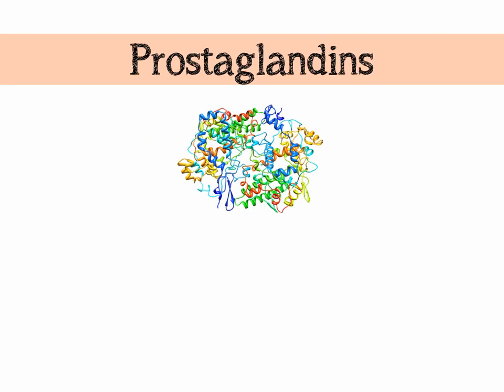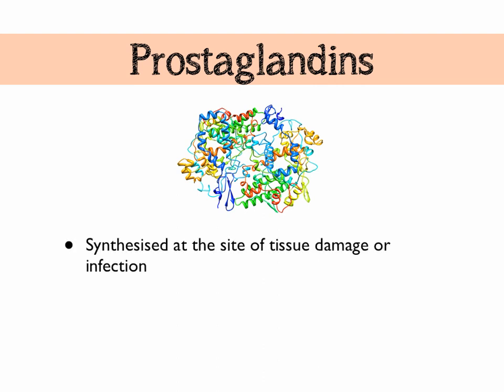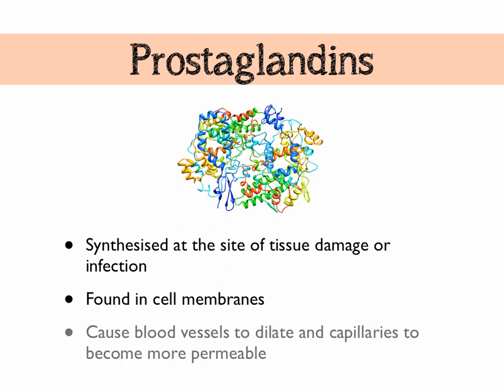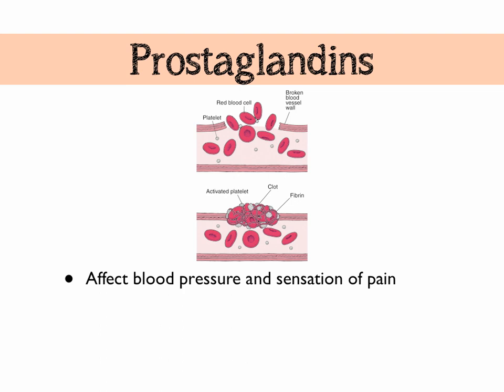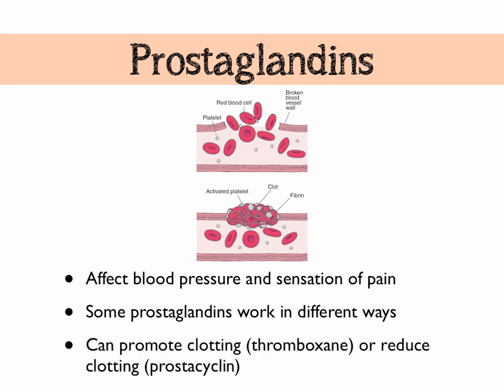Prostaglandins are synthesized at the site of tissue damage or infection, and we find them in cell membranes. Just like histamines, they cause arterioles to dilate and capillaries to become more permeable. Prostaglandins also have a role in blood pressure and the sensation of pain — some increase blood pressure and cause pain. Interestingly, some prostaglandins work antagonistically. The best example is blood clotting: thromboxane promotes clotting, while another prostaglandin called prostacycline reduces clotting.